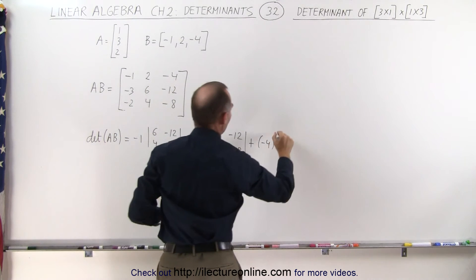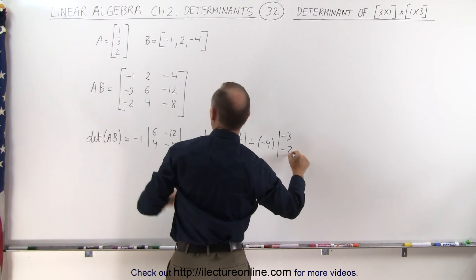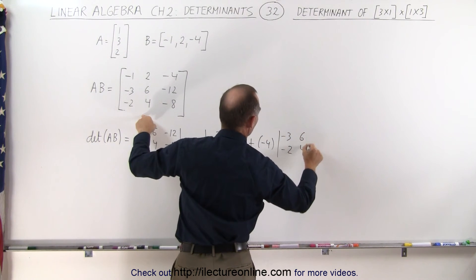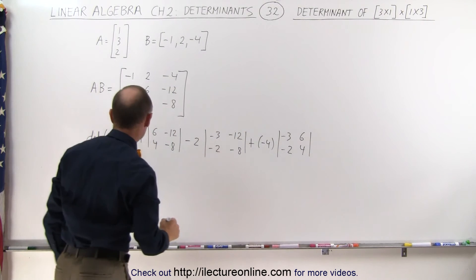And then plus negative 4 times if we cross out this row in this column we get those four elements: negative 3, negative 2, 6 and 4. Let's see what that equals to.